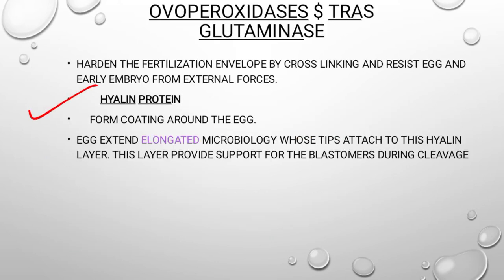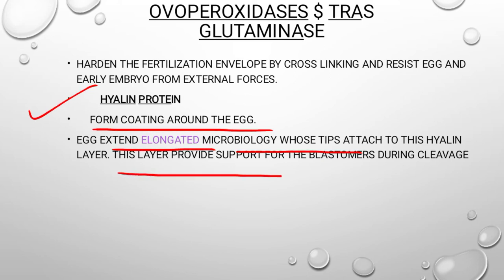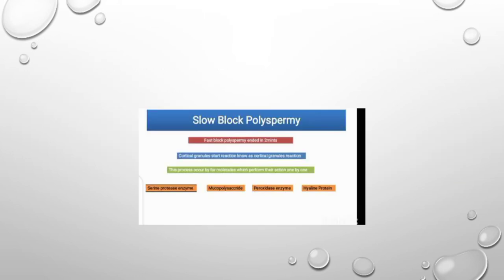Hyaline protein is a very important protein that forms a coating around the egg. Hyaline protein forms a coating around the egg, and egg microvilli tips attach to this hyaline layer. This layer provides support for the blastomeres during cleavage. Hyaline protein is also called the combining protein.